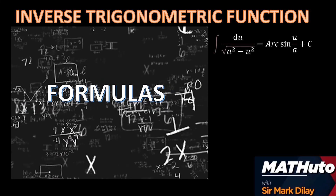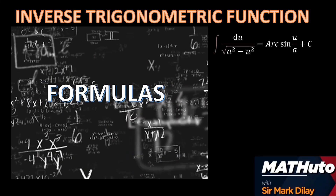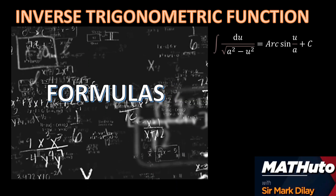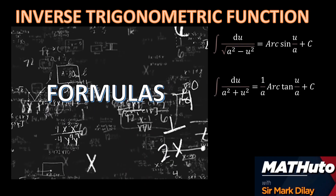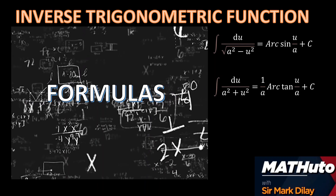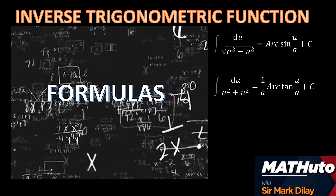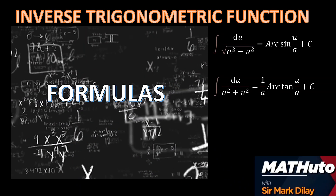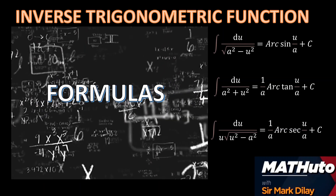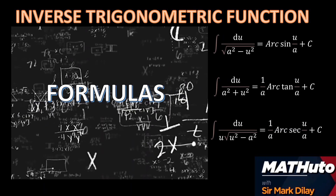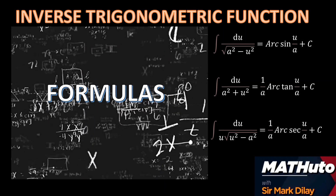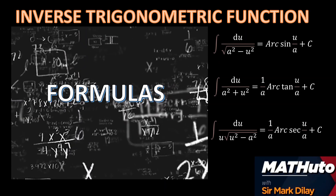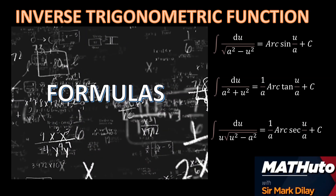First, the integral of du over the square root of a² minus u² equals arcsin(u/a) plus C. The integral of du over a² plus u² equals (1/a) arctan(u/a) plus C. The integral of du over u times the square root of u² minus a² is equal to (1/a) arcsec(u/a) plus C.